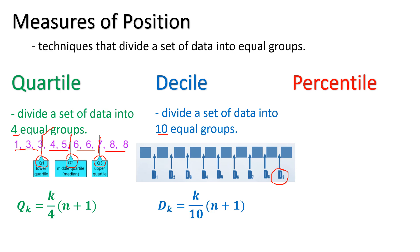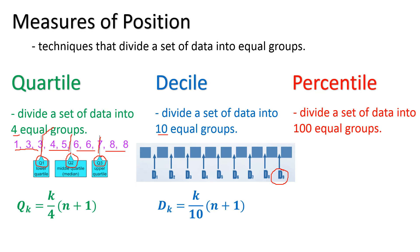For the percentile — from the root word 'percent' — this divides the set of data into 100 equal groups. To compute for a percentile class, it is k over 100 times n plus 1. If you notice, these formulas are quite similar — they only differ in the denominator: 4 for quartile, 10 for decile, and 100 for percentile.